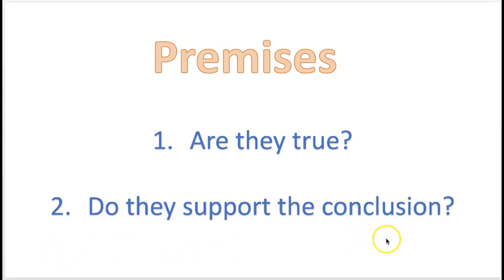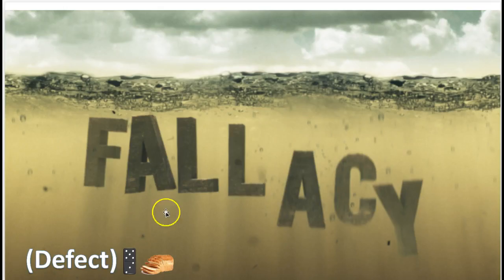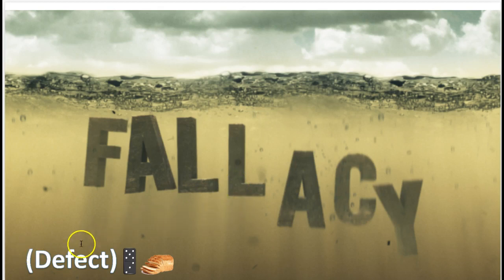The conclusion could be true, but not based on this argument, because the argument contains a fallacy. We'll talk about fallacies. What is a fallacy? If you find a premise that's not true, or doesn't support the conclusion, you have found a fallacy — which is basically a defect in the argument.